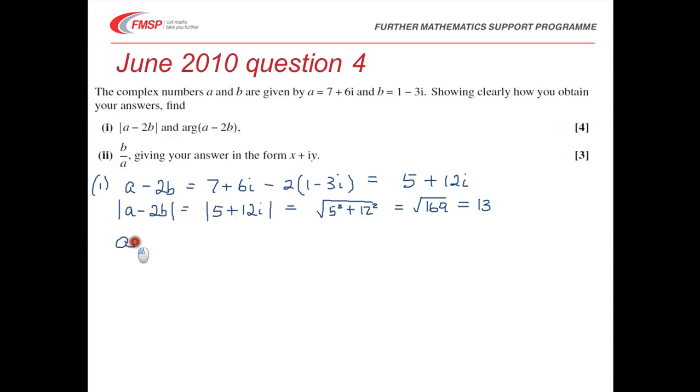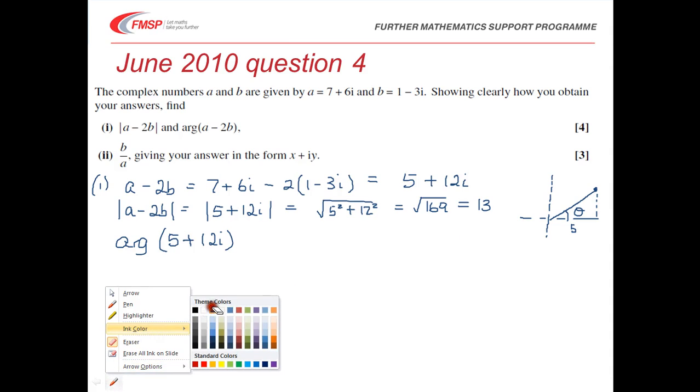And then we're asked to find the arg of A minus 2b. In other words now we know that means the arg of 5 plus 12i. So just remember that if you need to use a diagram then what we're saying is we are finding the angle between the positive real axis and this one that has, we'll call it theta. So the adjacent is 5 and the opposite is 12. So if we just correct that.